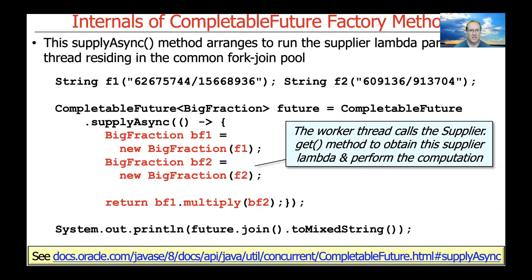Eventually this supplier lambda will be called using its get method, because that's what suppliers provide. The get method will be called, but not in the calling thread — it'll be called in the context of some worker thread. That will invoke the supplier get method, which will execute the computation packaged up in the lambda in the context of the worker thread. That's the genius and beauty of functional programming and its combination with asynchronous computations through a message-driven, message-passing architecture.